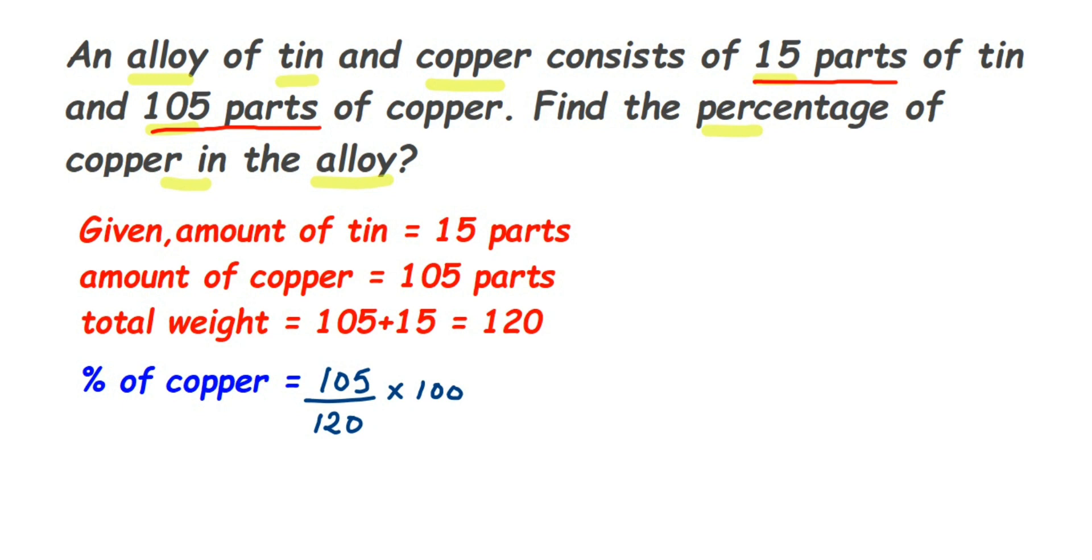I'm going to cancel this 0 and then 0. We have 10 and 12. We're going to cancel this in two tables. 2 6s are 12 and then 2 5s are 10. We cannot cancel anything further. So this will be equal to 105 multiplied by 5 divided by 6.